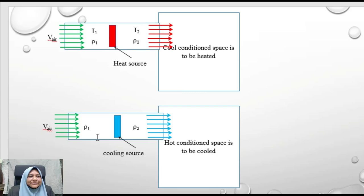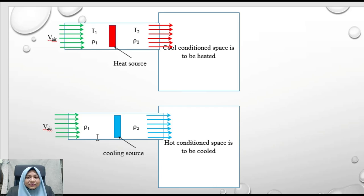Here is an illustration showing a heat source and a cooling source used to cool down a hot conditioned space. There is a pressure difference present so that air may flow. When there is a pressure difference, and if the cross-section of the duct is the same from one end to the other, then the velocity of airflow is the same from one end to the other.